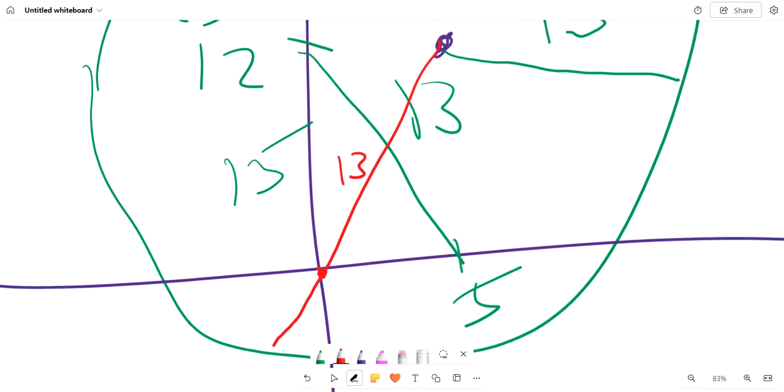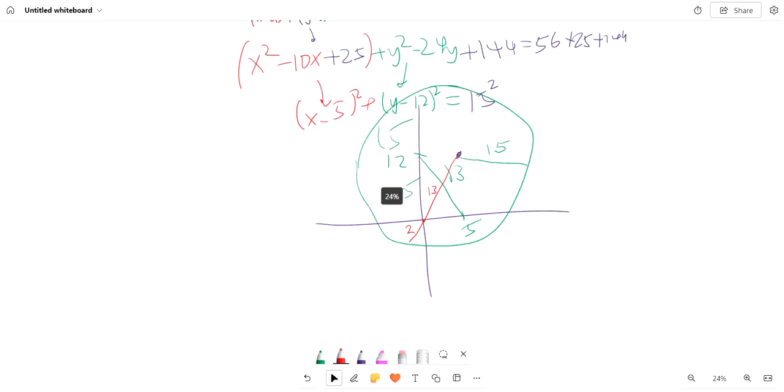Because a 5, 12, 13 triangle, right triangle. And that means that this is 2, because 15 minus 13 is 2. And what we're trying to look for is...